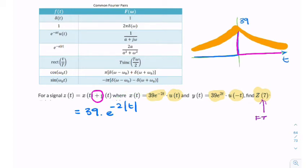So now, rather than having a composite signal with two components, x and y, we can now look up in our table, this two-sided exponential. And there it is.